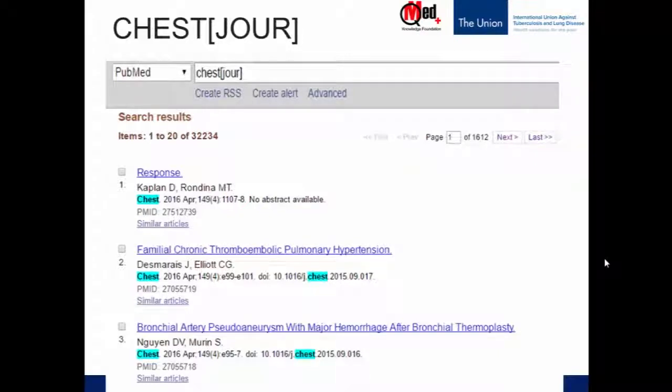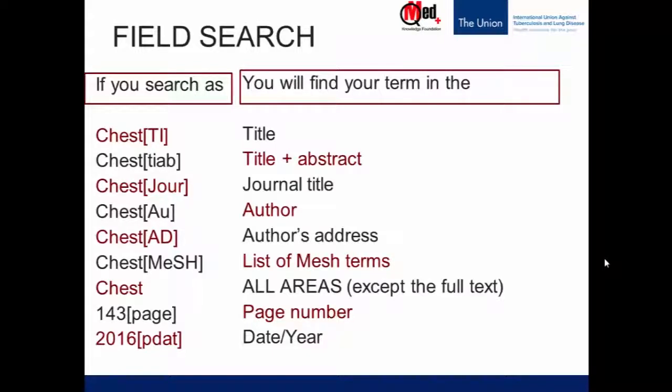Let's see more tags. We have 'chest [au],' which means we are looking for items where the author's name is Chest. 'Chest [ad]' means the word chest will appear in the author's address — for example, Institute of Chest and Allied Diseases, or Department of Chest Medicine. 'Chest [mesh]' is a tag we already learned in Principle 2, and it is also a field — the word chest will appear in the list of MeSH terms. If we do not tag the word chest, PubMed searches for it in any of these areas, except the full text, which is not in the PubMed database.